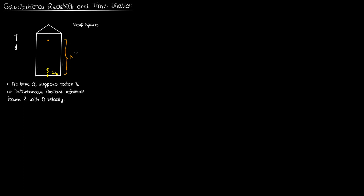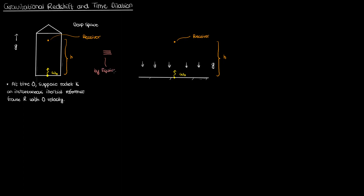There's an observer at the top of this rocket ship located a distance h above the source who will receive these wave signals. Recall that the equivalence principle is the foundation of general relativity. According to it, the observations of someone inside this uniformly accelerating rocket ship are equivalent to the observations of someone in a uniform gravitational field. So if I draw a uniform gravitational field with the source at the bottom and a receiver a distance h above the source, the observations made by the gravitational field observer are equivalent to those made by the observer in the accelerating rocket ship. This means if I analyze the frequency change measured by my rocket observer, that analysis will also hold true for the observer in the uniform gravitational field.